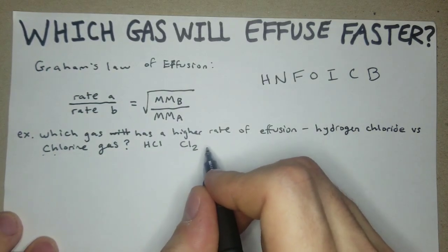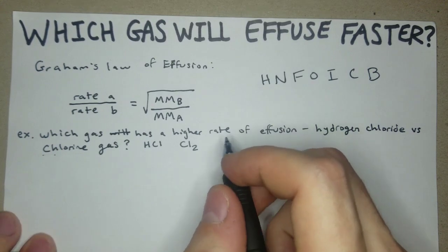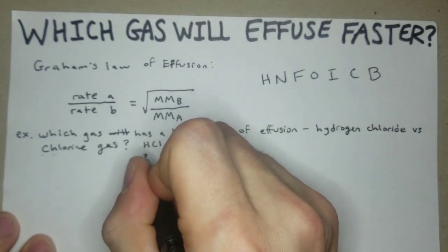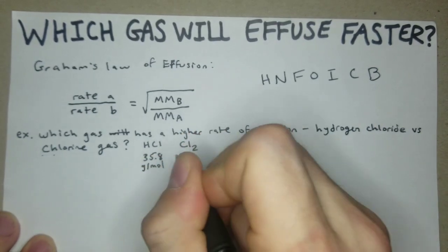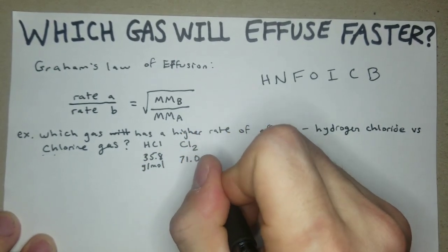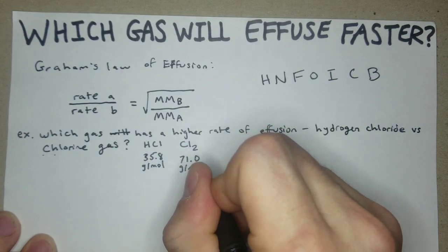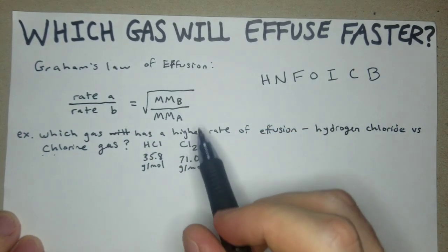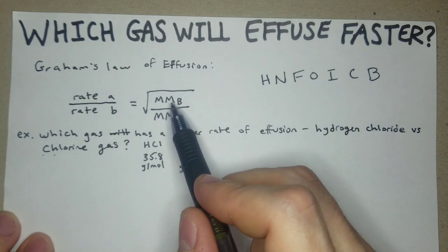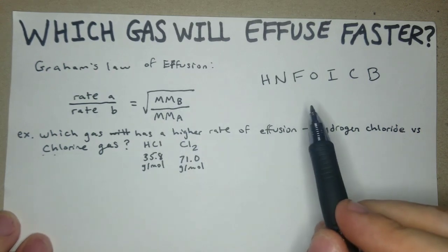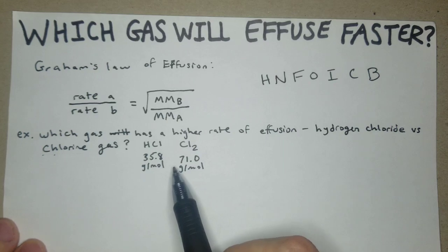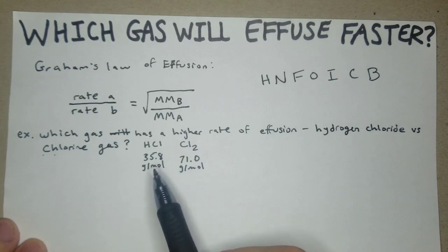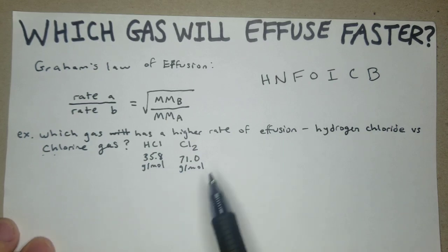First step is basically to find the molar masses of each. For HCl we know it's 35.8 grams per mole, and for Cl2 we're going to have 71.0 grams per mole. Now we have our molar masses, and just looking at these numbers too you should be assuming that HCl is going to be a faster effuser than chlorine gas.